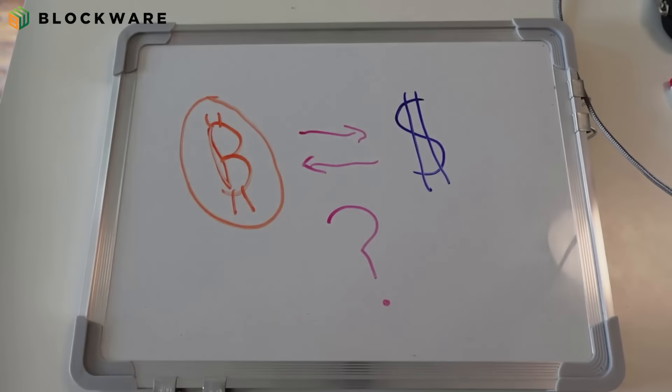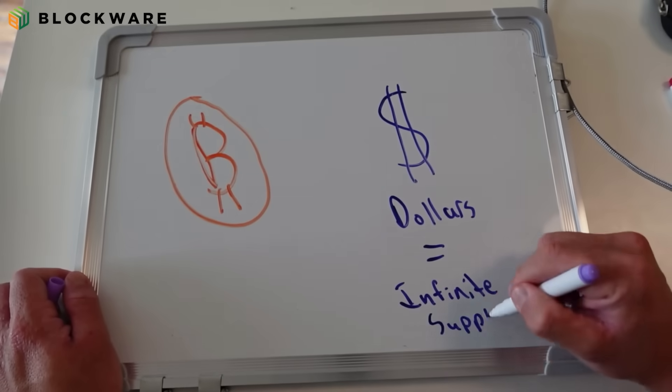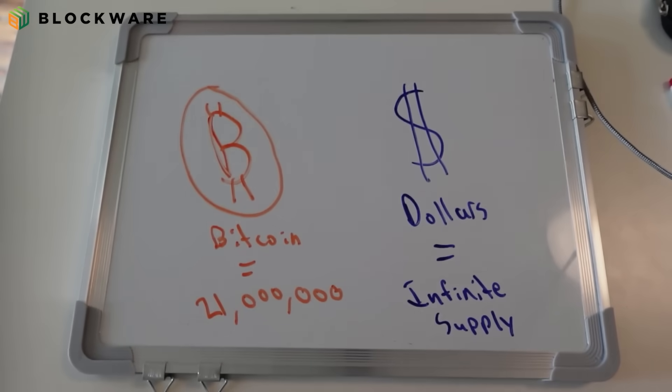The dollar price of Bitcoin is extremely difficult to predict, and it's been highly volatile over the years. Nobody has a crystal ball. However, the bullish case for Bitcoin as a financial asset derives from one main idea.